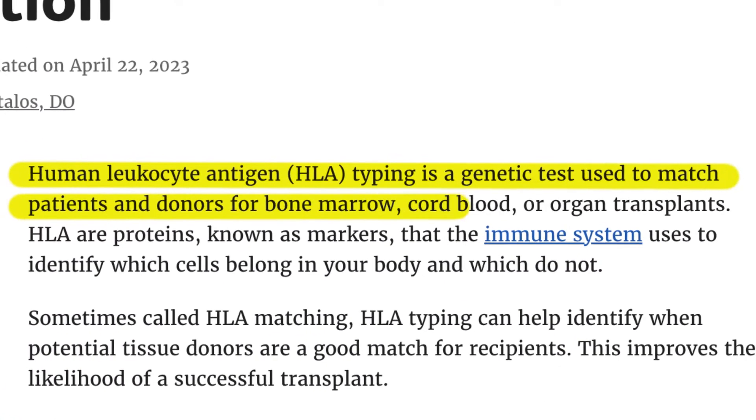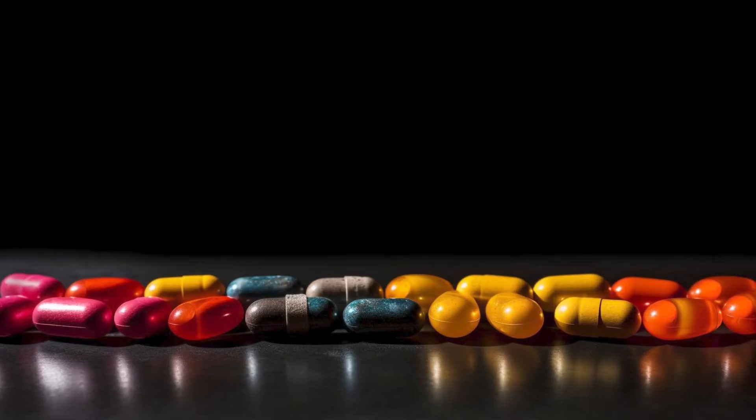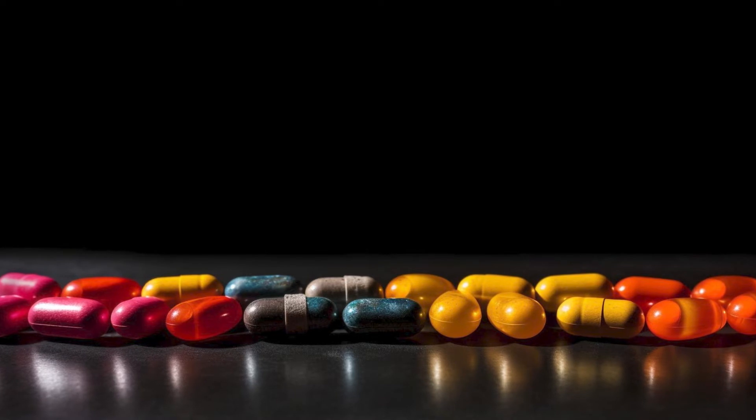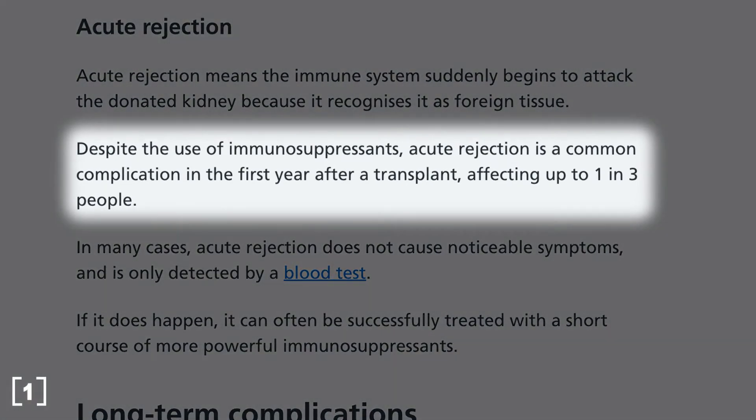Currently, we have different methods to reduce the risk of immune rejection such as HLA typing and immunosuppressant drugs, but still, acute rejection is a common complication in the first year after a transplant which affects 1 in 3 people.